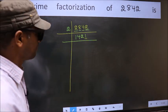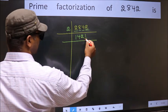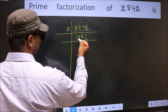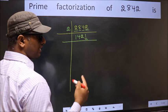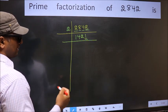Next prime number 5. The last digit is neither 0 nor 5, so this is not divisible by 5.